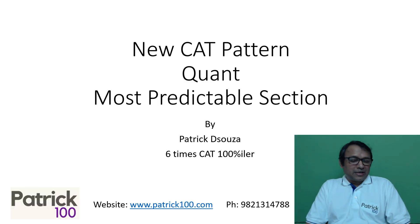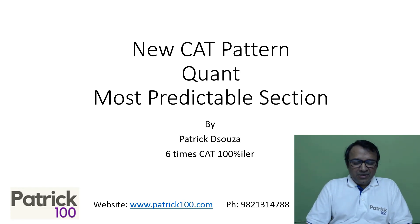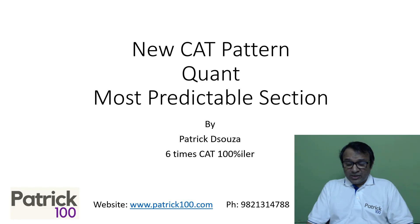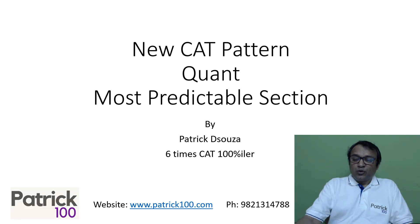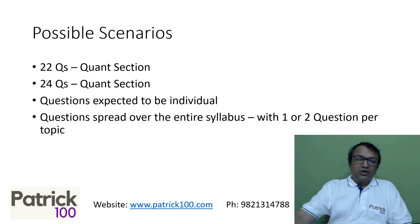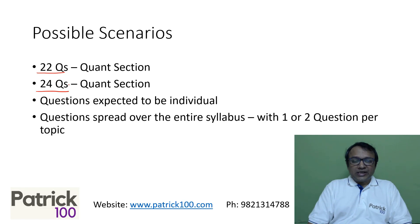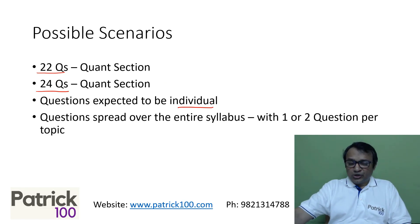In the new CAT pattern, the number of questions has been reduced. The most predictable section is Quant — you have similar types of individual questions, with no group question sets. You should ideally expect around 22 or 24 questions in the Quant section, though 20 is also possible. Questions will definitely be individual; there are no group question sets in recent exams.